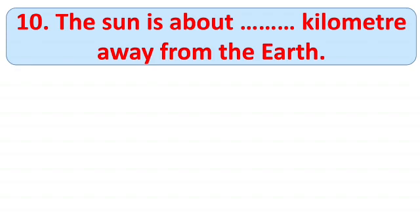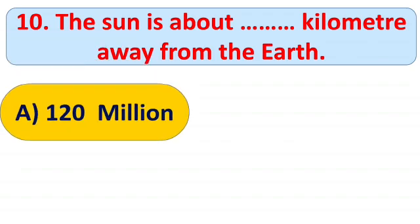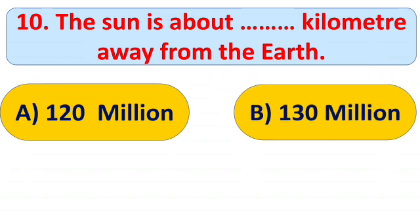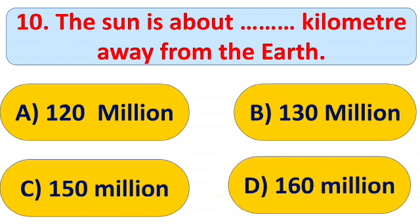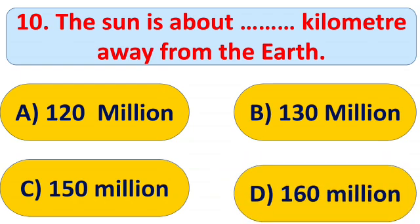Question number ten: the sun is about blank kilometers away from the Earth. Options: A) 120 million, B) 130 million, C) 150 million, and D) 160 million kilometers. The right answer is C) 150 million kilometers. The sun is about 150 million kilometers away from the Earth.